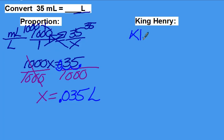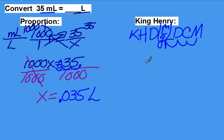Using the King Henry method, you can do King Henry died unexpectedly, meters, liters, and grams, drinking chocolate milk. You're going from milliliters to liters. One, two, three places to the left.